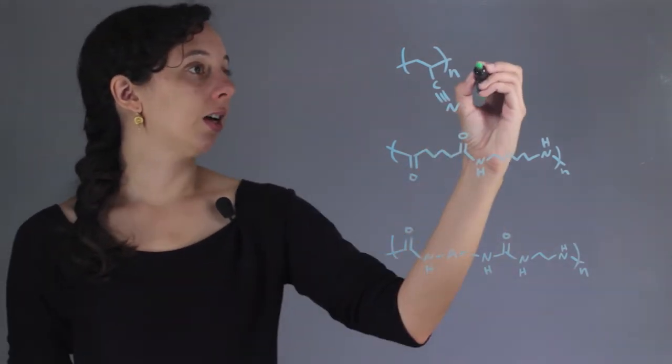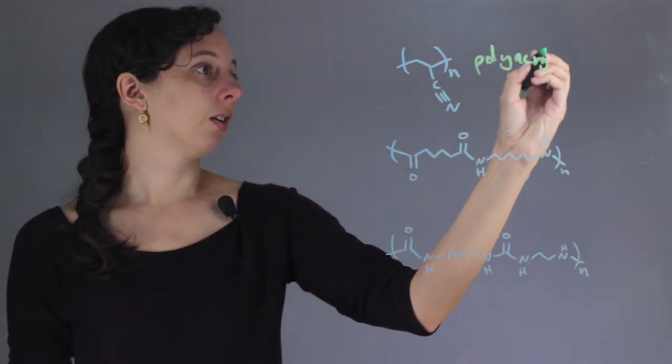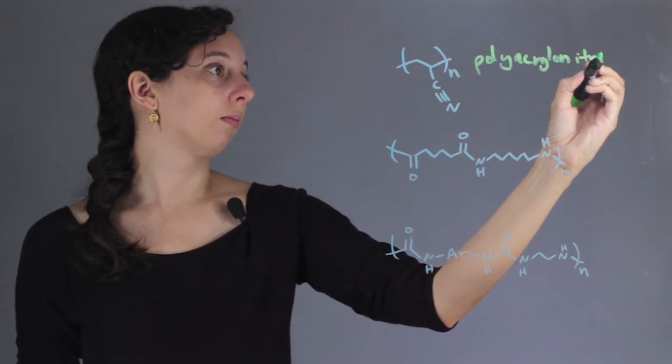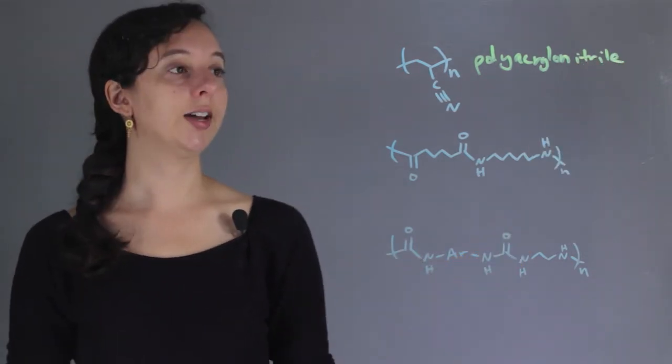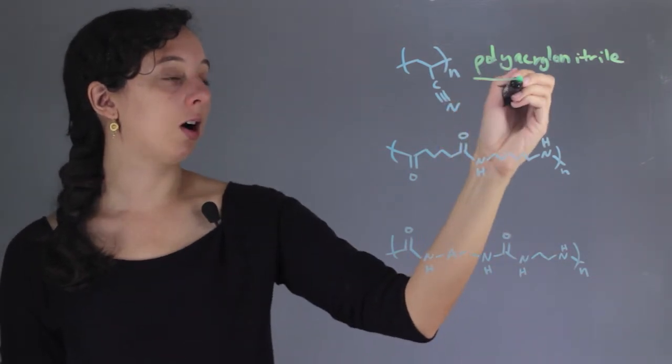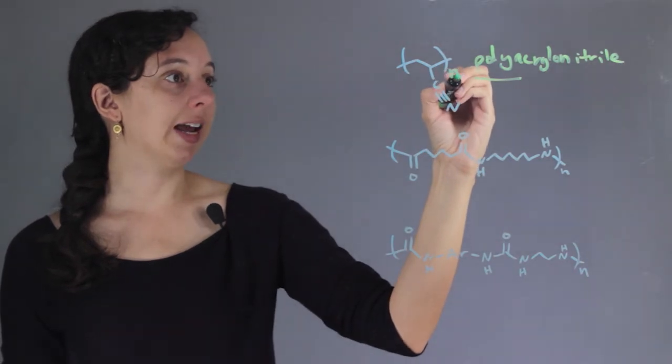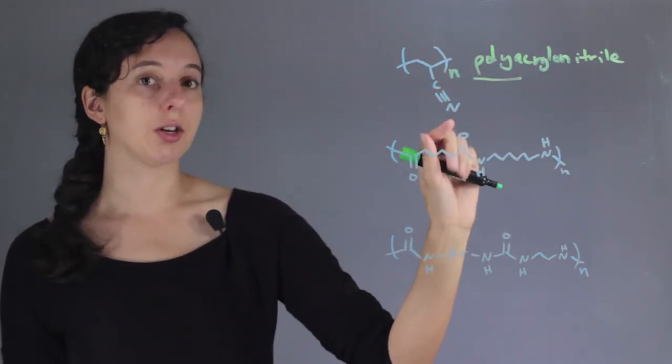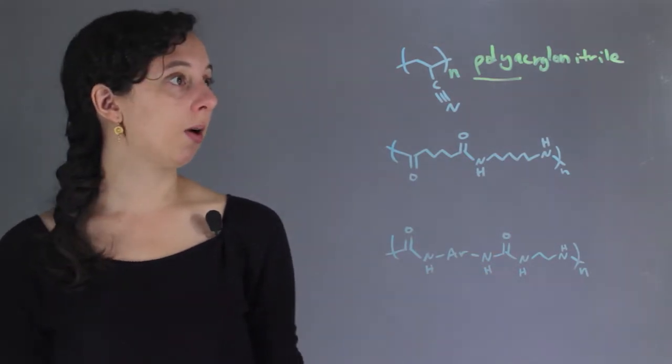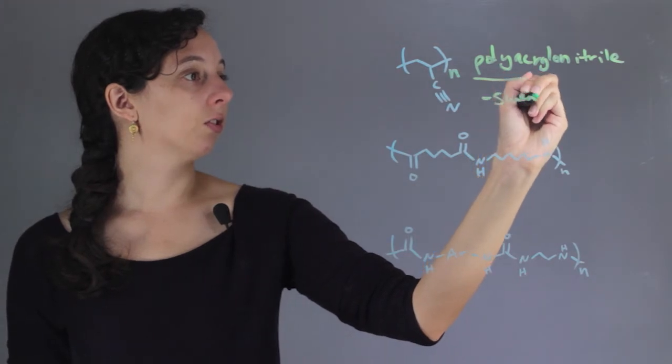So this structure up here is called polyacrylonitrile. And so the structure always has poly for polymers because it indicates that this little n is repeating. And so you have this structure and you have it repeating over and over thousands of times. And so polyacrylonitrile, amongst other things, is often used in sweaters.